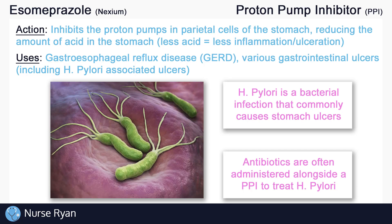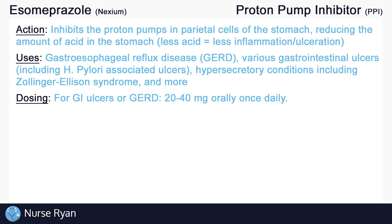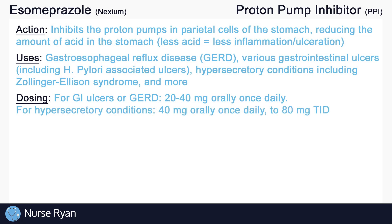Esomeprazole can also be used for hypersecretory conditions, including Zollinger-Ellison syndrome, a digestive disorder that results in excess gastric acid secretions, and more. Typical dosing for esomeprazole in adults is as follows: for gastrointestinal ulcers and GERD, esomeprazole is often ordered at 20–40 mg orally once a day. For hypersecretory conditions, dosing can be much higher — initial dosing may start at 40 mg once a day, and may be increased to about 80 mg three times a day, or TID.